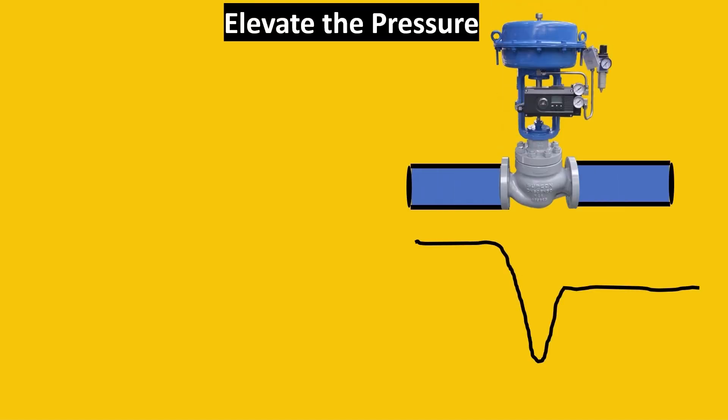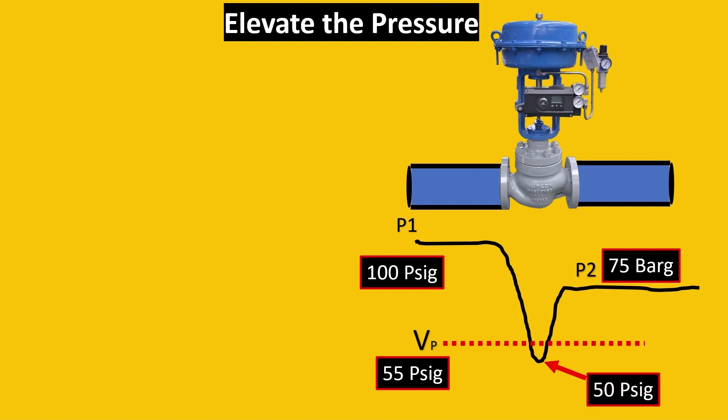Now let's look at the elevate the pressure solution. Here's your control valve and the pressure drop curve. Here's your vapor pressure. It's very clear that cavitation is going to happen here because the pressure drop is going beyond 50 psig and the vapor pressure is 55 psig.